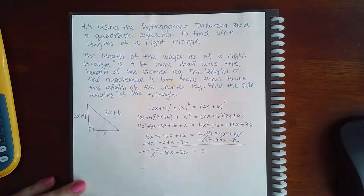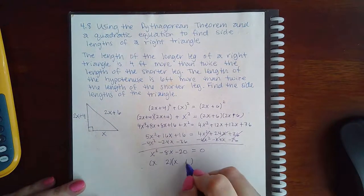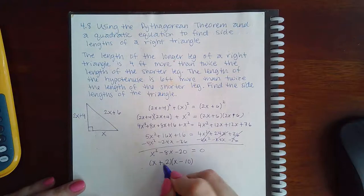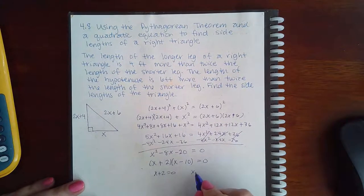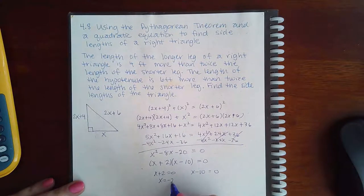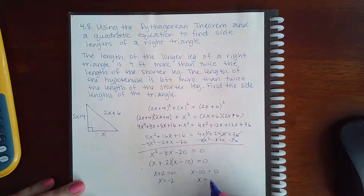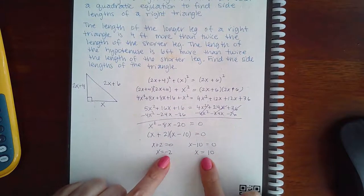And the factors are going to be x and x, 2 and 10, the bigger one being negative. So then we get x plus 2 equal to 0, x minus 10 equal to 0. Here if I minus 2 on both sides. Here if I add 10 on both sides, I get x equals negative 2 and x equals 10.